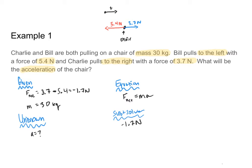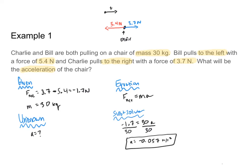Now I'm ready to sub and solve. My F net is negative 1.7 newtons — found by taking the sum of the vectors of my two forces, adding all the right-direction forces and subtracting all the left-direction forces. That negative 1.7 equals my mass, which is 30, times my acceleration, which is my unknown. Dividing by 30, I find that my acceleration is negative 0.057 meters per second squared. That negative sign just means my chair is going to accelerate to the left, which makes sense because we have more force to the left than to the right.